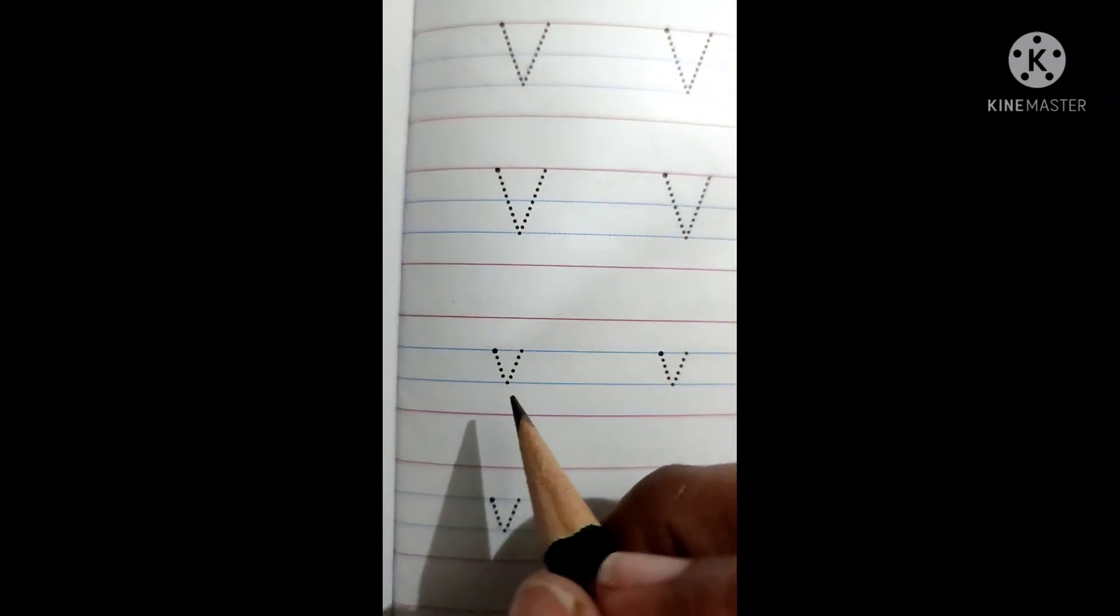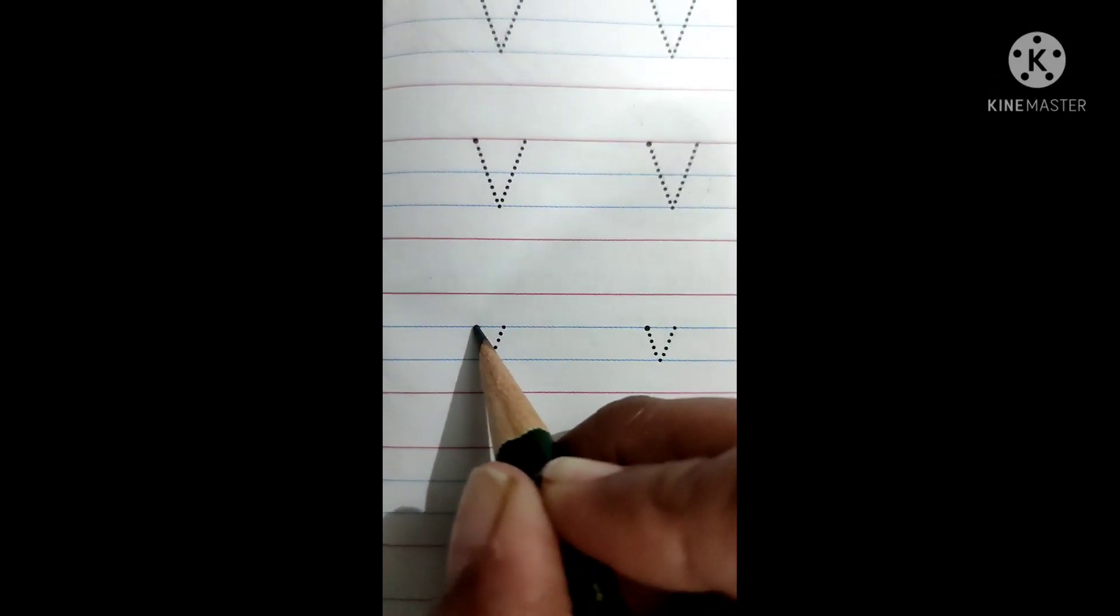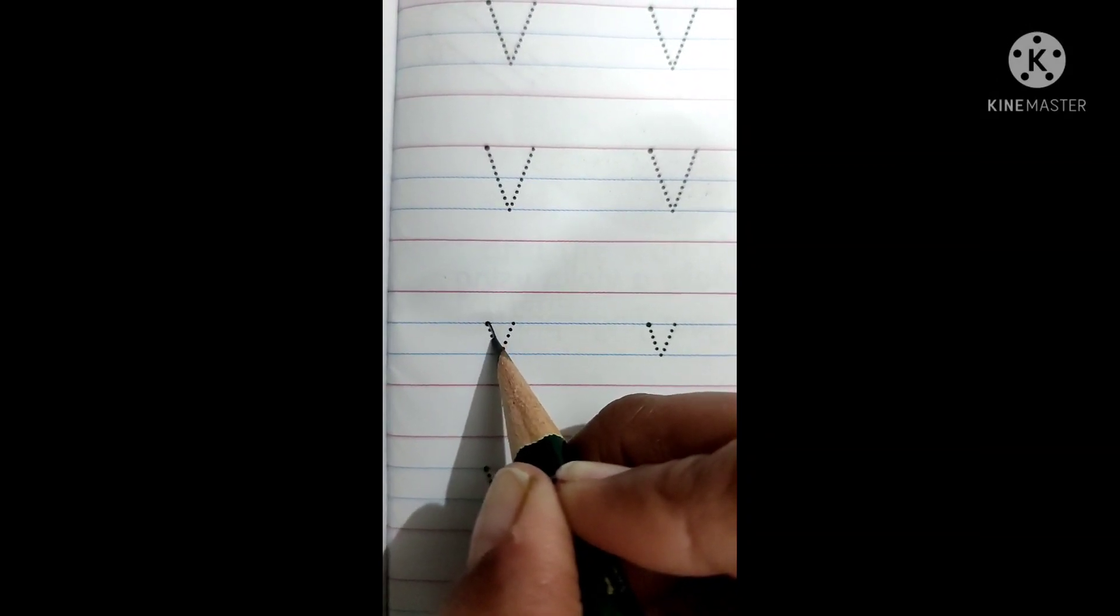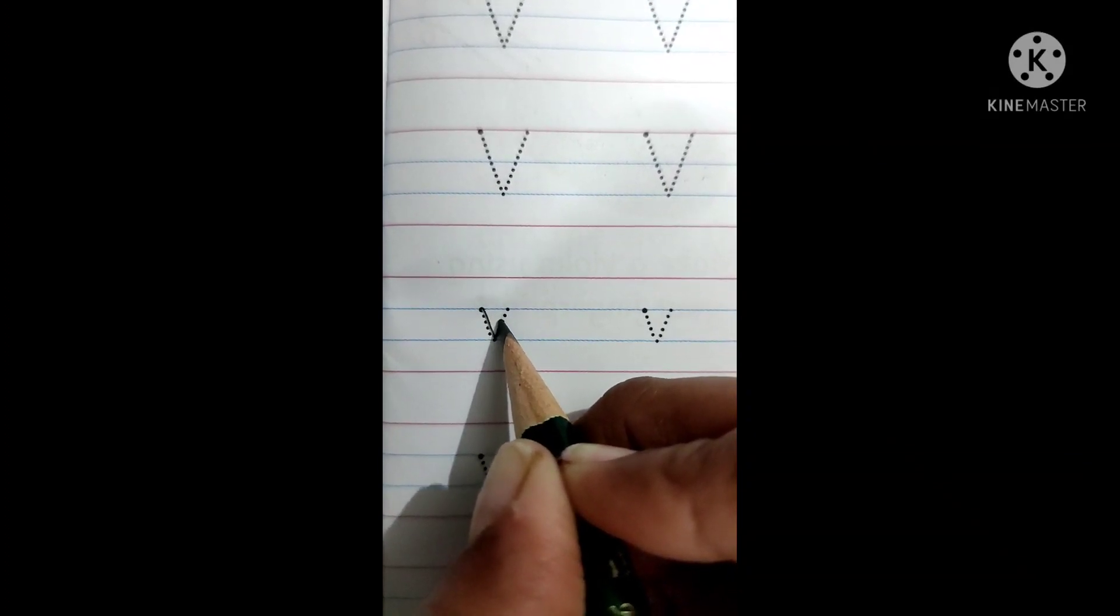This is capital V and see small v. We will start from the dot, which means we will start with second line. Slant line down. Slant line up. Both are same.